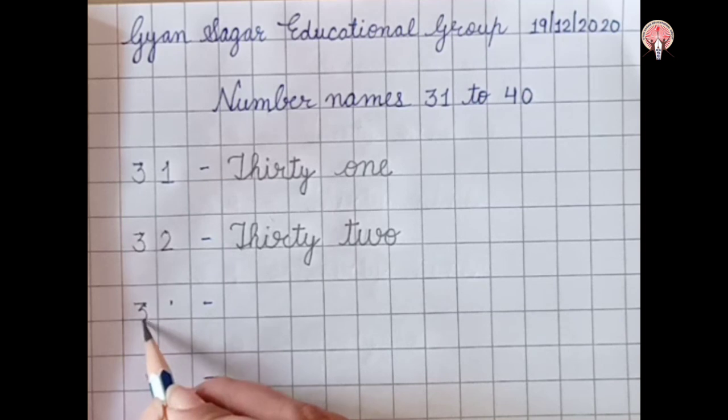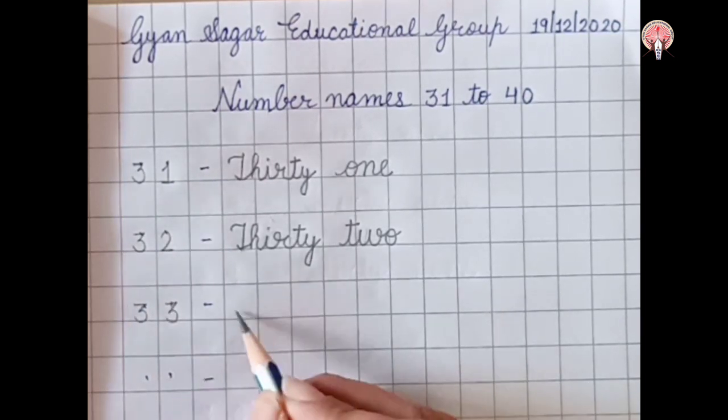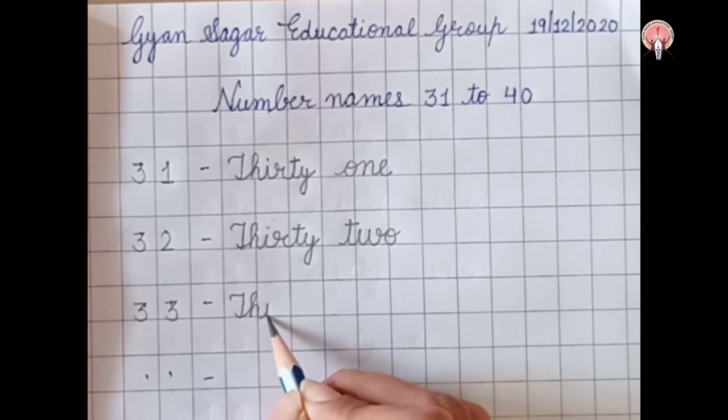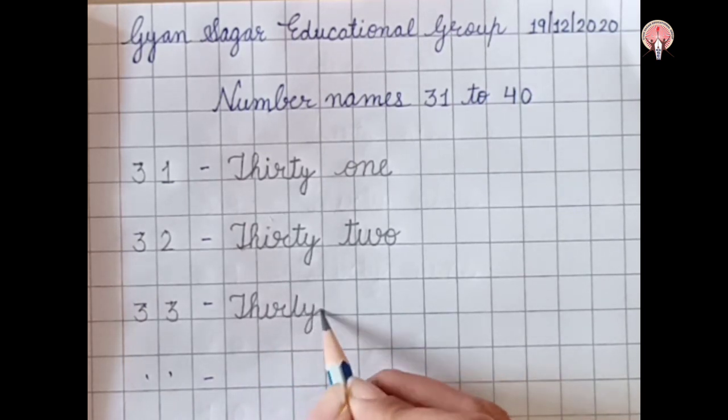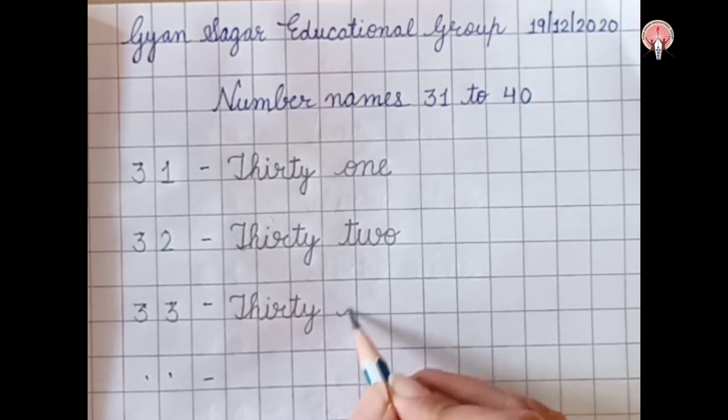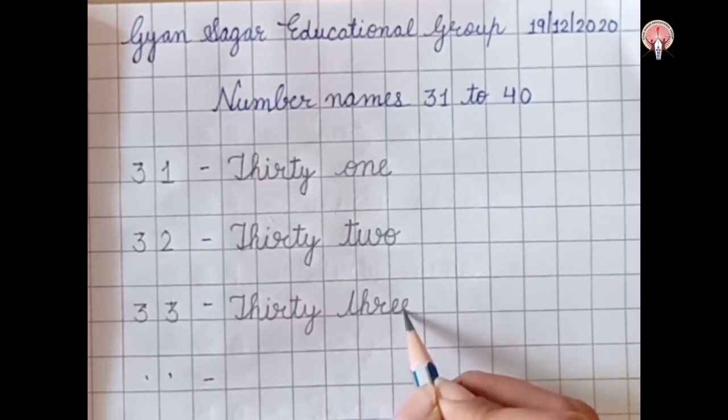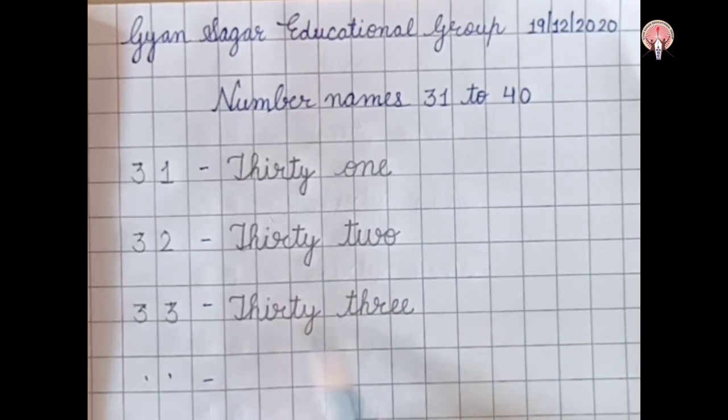3, 3. Thirty, T-H-I-R-T-Y, 30. Three, T-H-R-E-E, 3. 33.